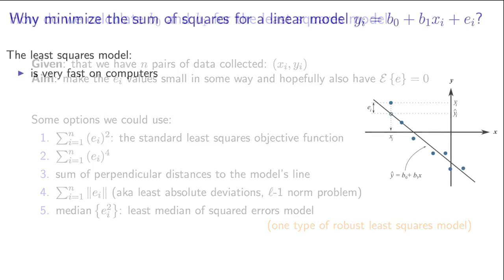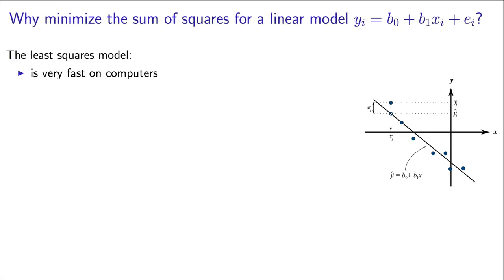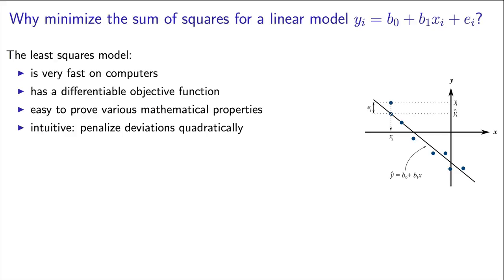The answer is quite simple. The least squares objective function is very fast on computers. Because it is a differentiable function, it's very easy to make mathematical proofs and derive properties from it. It is also an intuitive function, easy to explain to someone who is not familiar with the process.